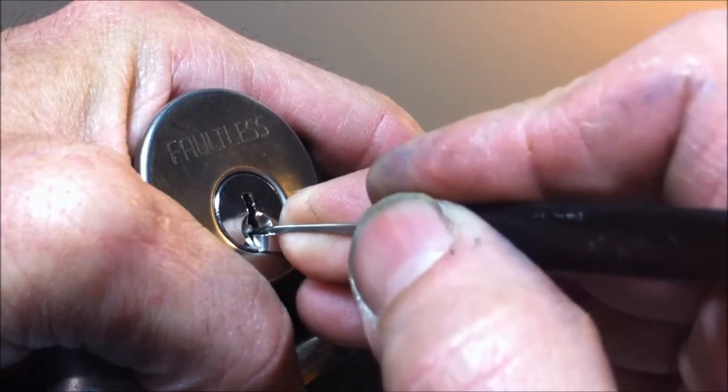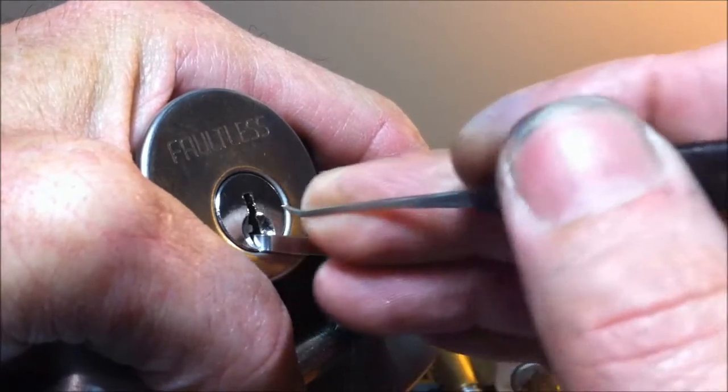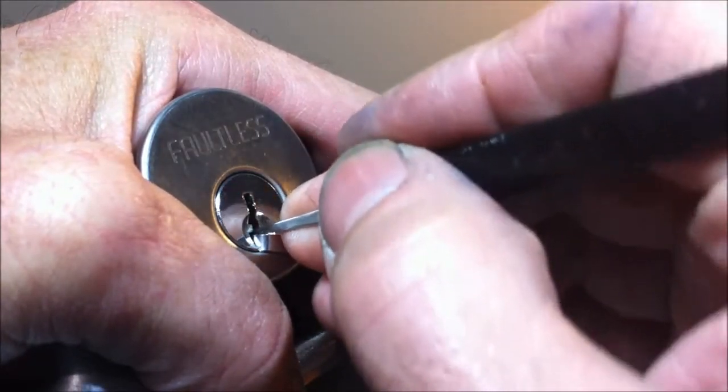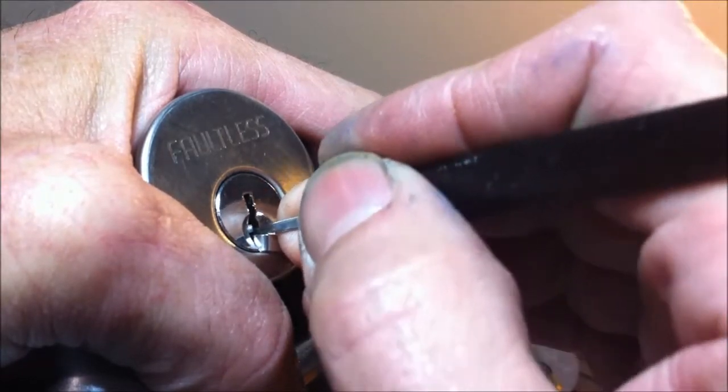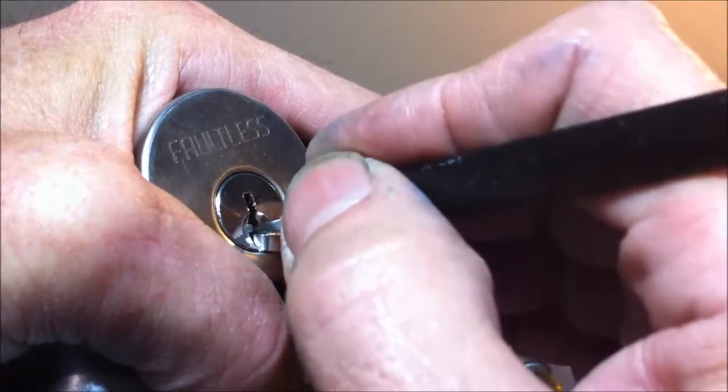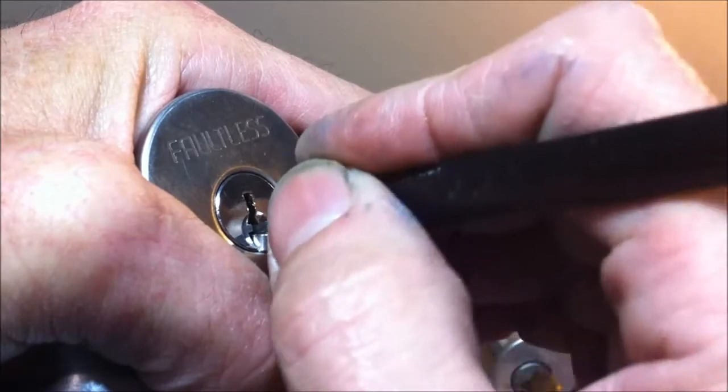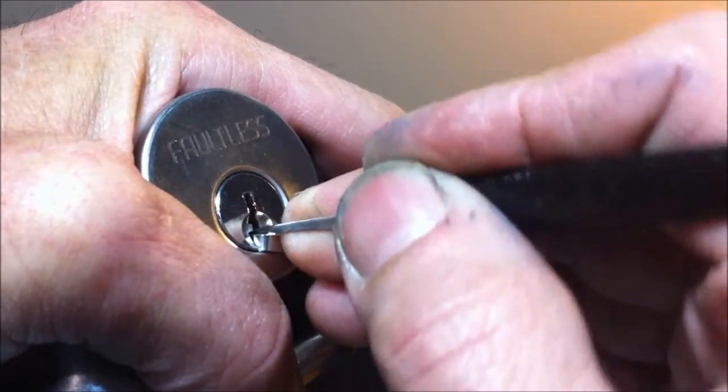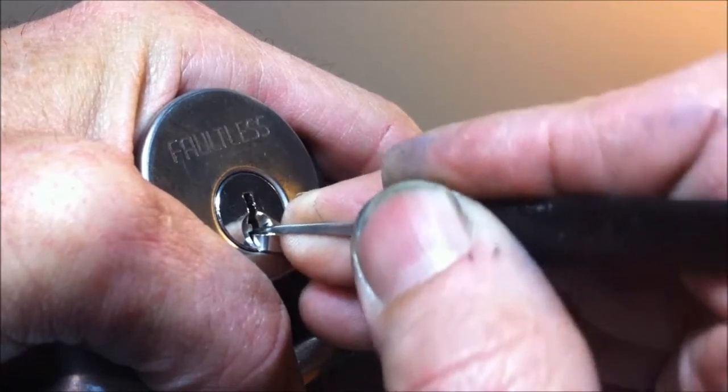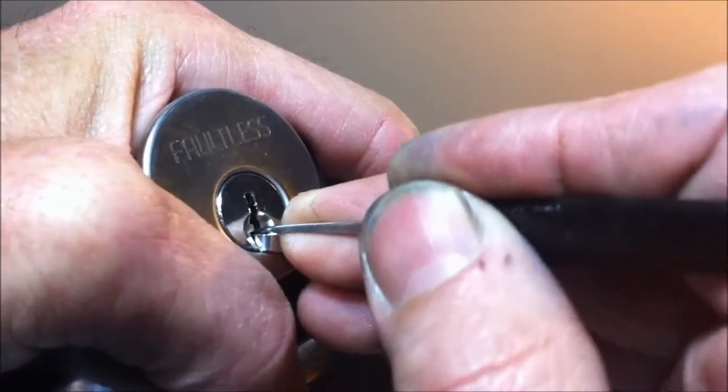All right, so one is actually binding, getting some counter rotation. Okay, I got a click out of him. Two is springy. Got a little click from three. And I don't think I could get four or five with this pick.